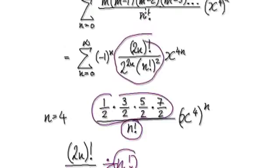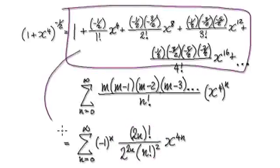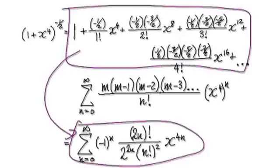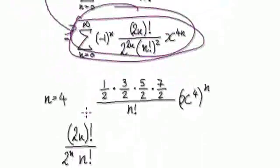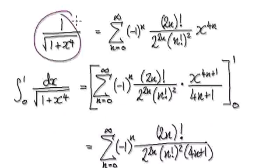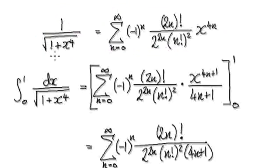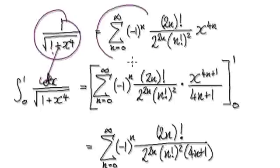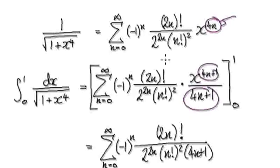So the whole point here is that you can rewrite this whole thing as this. So this thing here equals this thing here. Now integrate both sides. We don't know how to integrate the left side directly, so we're going to integrate the series. To integrate the series — we've done this before — the power goes up by 1, and then you divide it by 4n plus 1.